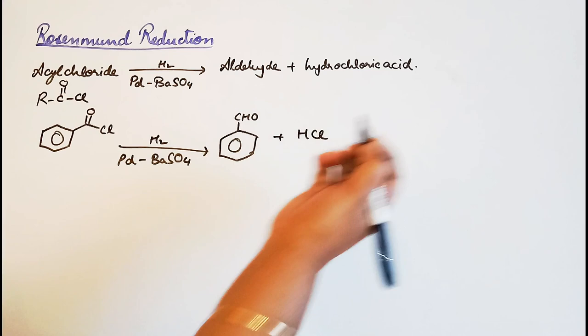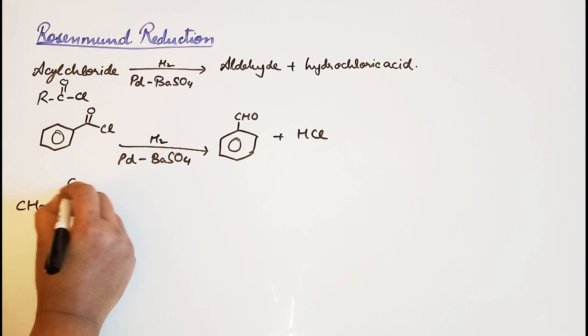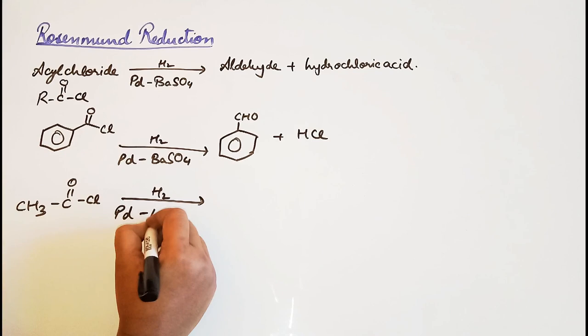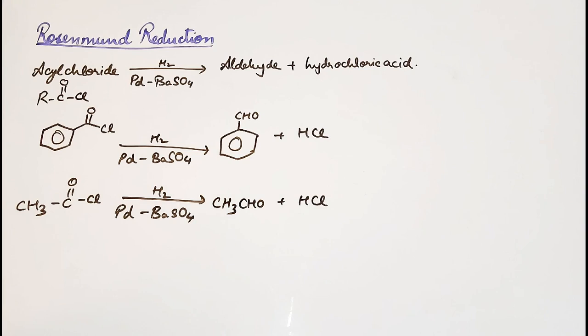Another example: CH3COCL undergoes reduction in the presence of palladium and barium sulfate to lead to the formation of ethanal plus hydrochloric acid.